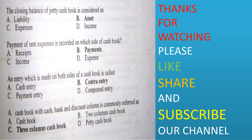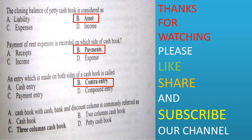The closing balance of petty cash book is considered as: liability, asset, expenses, or income. Option B is correct. Payment of rent expenses is recorded on which side of the cash book? Receipts, payments, income, or expense. Option B is correct. An entry which is made on both sides of the cash book is called: cash entry, contra entry, payment entry, or compound entry. Option B is correct.